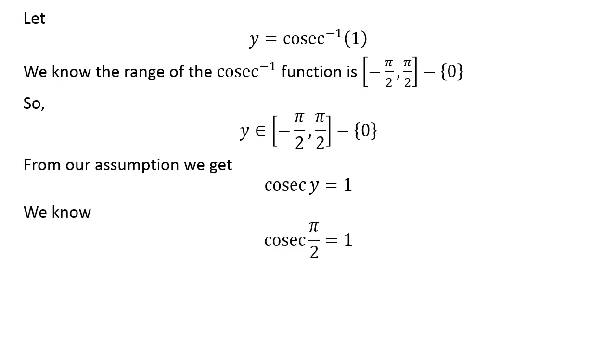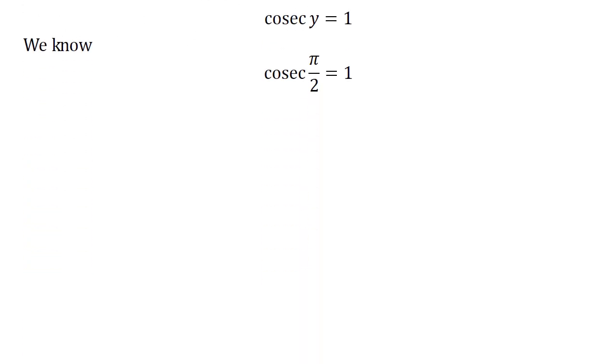We know cosecant of half of pi is equal to 1. As half of pi lies in the closed interval of minus half of pi and half of pi except 0.